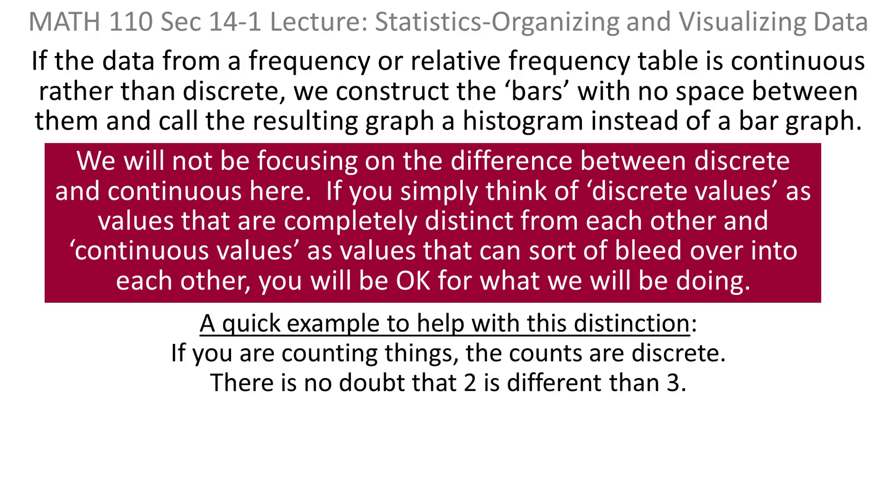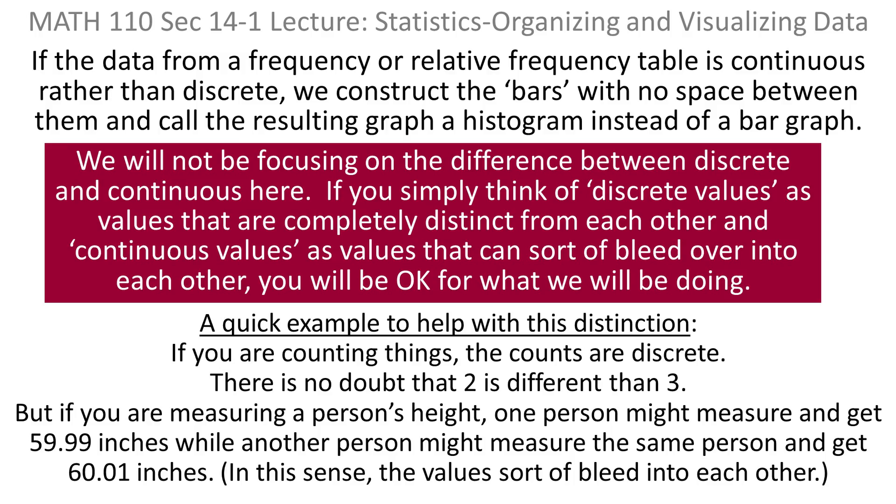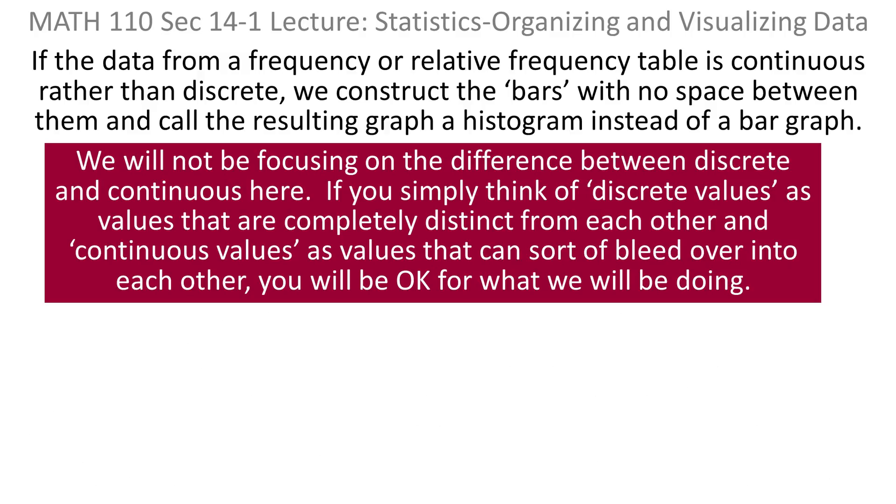A quick example. Suppose you're counting things. Those counts are distinct. There's no doubt that two is different than three. On the other hand, if you're interested in measuring a person's height, one person might measure and get 59.99 inches. Another person might measure that same person and get 60.01 inches. And that's the sense when I say the values sort of bleed into each other. There's not necessarily a right measurement. Those are continuous.